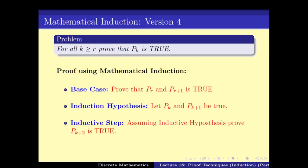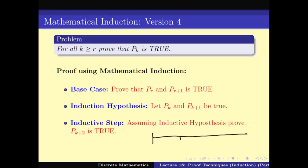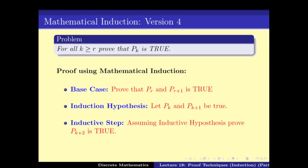If we can prove Pk+2 from Pk and Pk+1, that solves our whole problem. To see why: the base case gives us R and R+1; the inductive step then gives us R+2 from R and R+1; then R+3 from R+1 and R+2; and so on. Continuing this way, we can prove Pk for all k greater than or equal to R. So this is also a valid induction hypothesis.